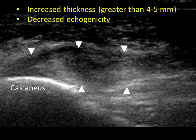Fascia thickening greater than 4 mm and decreased echogenicity establishes the diagnosis of plantar fasciitis. Hypervascularity of the fascia and the adjacent soft tissue on color Doppler implicates acute plantar fasciitis. In severe cases, partial tear or even complete rupture of the fascia can be observed.